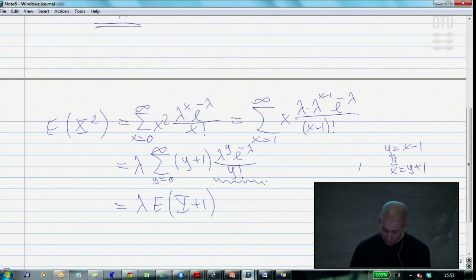So we have the mean of this one. So we use the fact that we know what is the mean of the Poisson. We just found that. That would be lambda, and then we still have the 1, lambda plus 1.